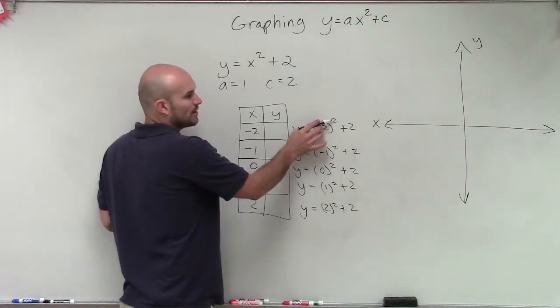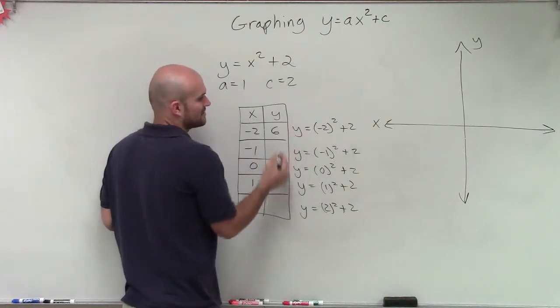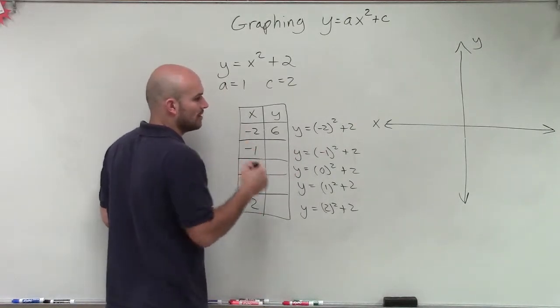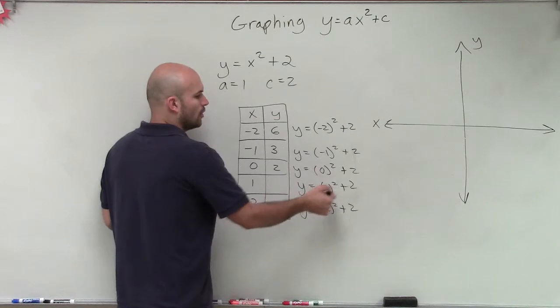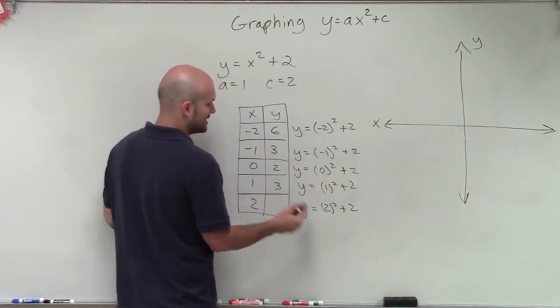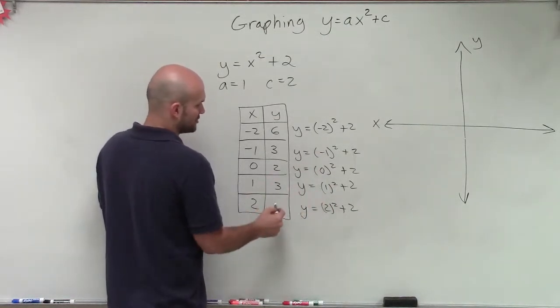So let's go and evaluate our answers. So I have negative 2 squared is 4 plus 2 is 6. Here I have negative 1 squared is 1 plus 2 is 3. 0 squared is 0 plus 2 is 2. 1 squared is 1 plus 2 is 3. And 2 squared is 4 plus 2 is 6.